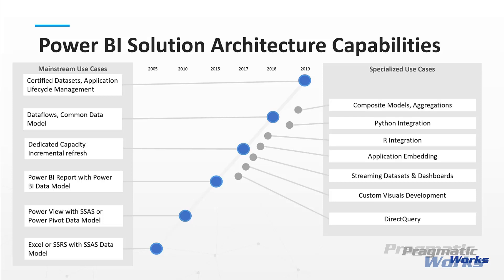Composite models and aggregations are really paired with direct query. They give us the ability to maintain some connections using direct query and other connections to tables that import data, forming composite models where these tables can be related to each other. To mitigate the traditional performance issues with direct query, we can create aggregations over direct query tables that cache aggregate result sets. Machine learning, cognitive services, and other AI capabilities are now integrated into Power BI Premium and surfaced through the common data service — including text recognition, translation, facial recognition, object detection, correlations, predictions, and other advanced AI features.